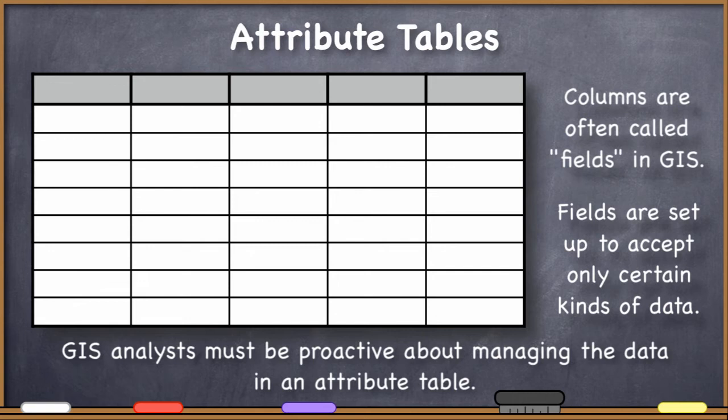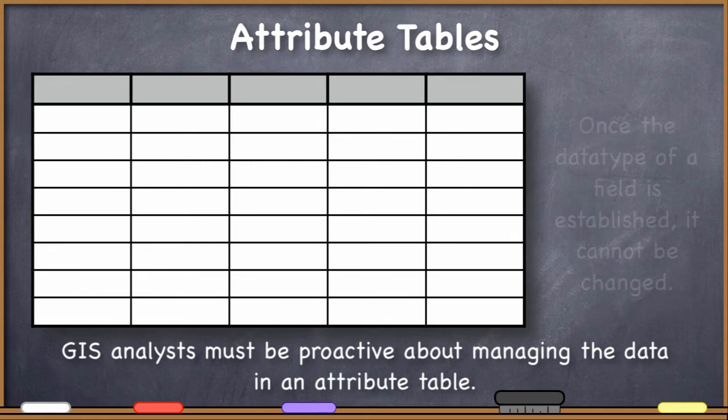As it happens, when you add this new column called a field, we'll just call them fields from now on, into the attribute table, you'll be asked what kind of data you would like to store in that field, and once you specify it, it's set forever.